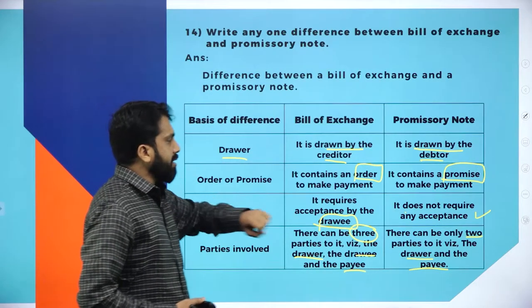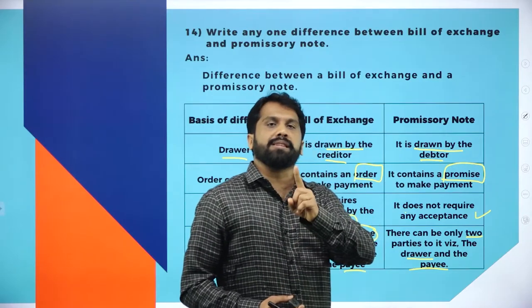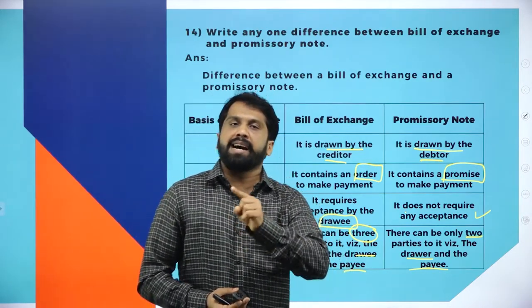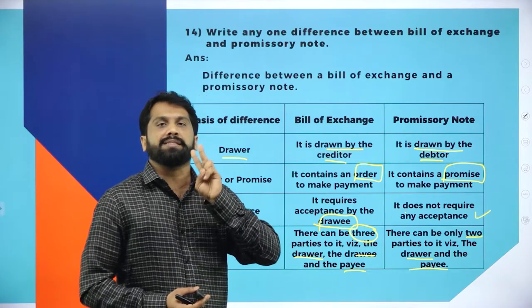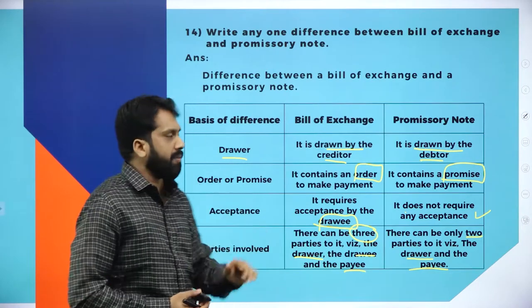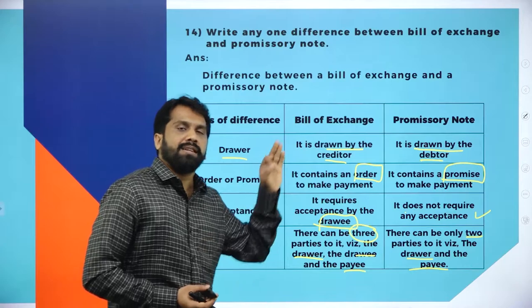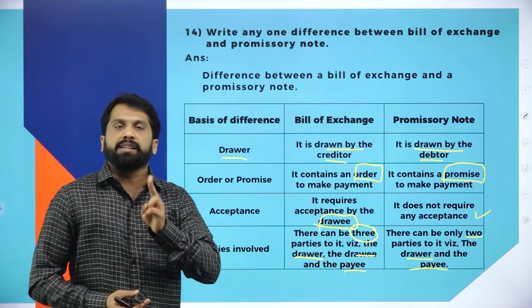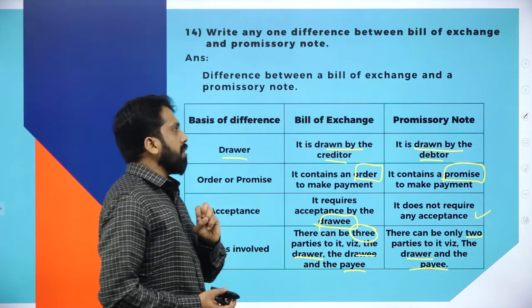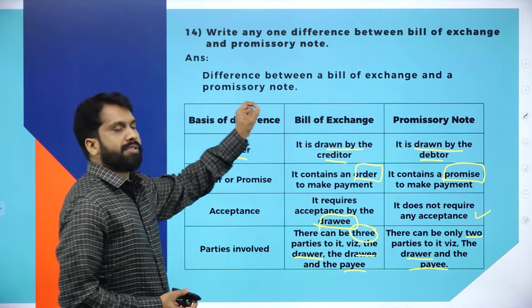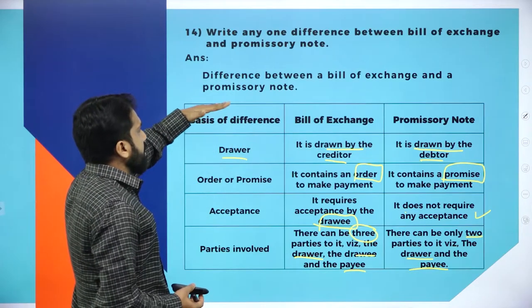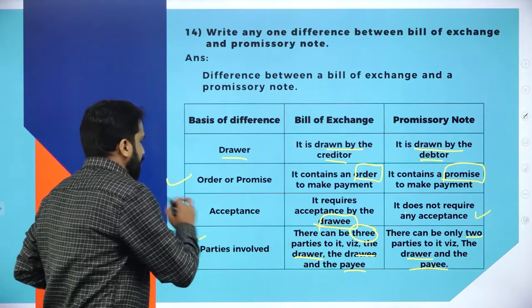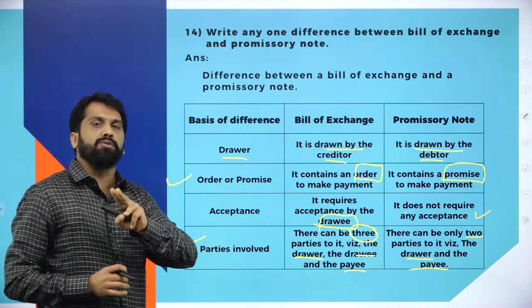So which points are easy to remember? Point 1: bill of exchange is order to pay; promissory note is promise to pay. Point 2: parties involved — in bill of exchange we have three parties; in promissory note we have only two parties. Remember these two points for your examination. Other things are not required, because this is not a 5-marks theory question — maximum you may get 2 marks. You have to prepare a column: basis of difference, bill of exchange, promissory note — write point 1 and point 2.